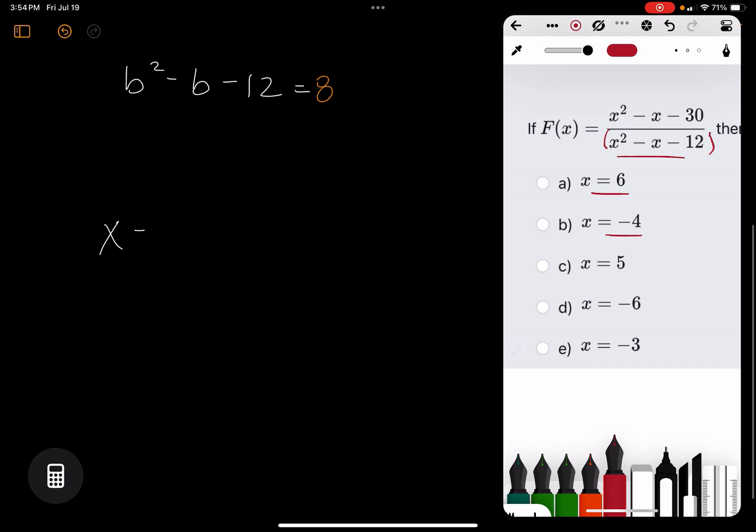So perhaps maybe we just go with the classic x and we say, well, okay, how about x equals six? And then we just say x squared minus x minus 12. And then we have to write equals and we get 18. And then we go, okay, well, let's just change that each time to negative four and to five and to negative six and negative three.